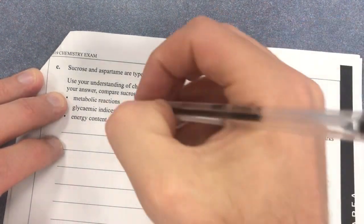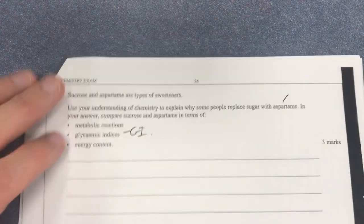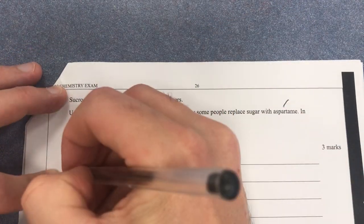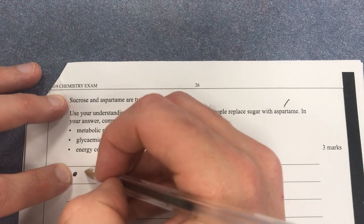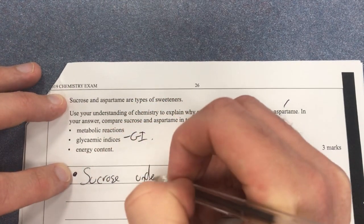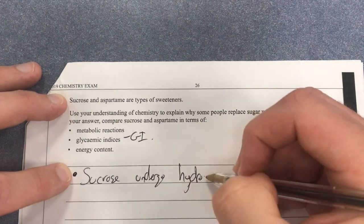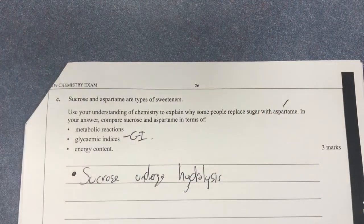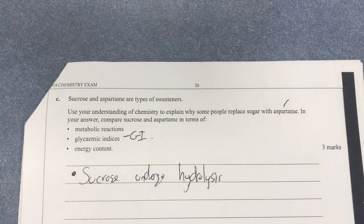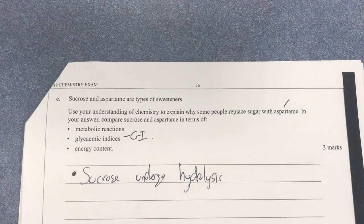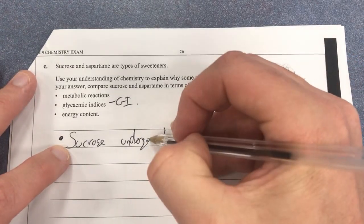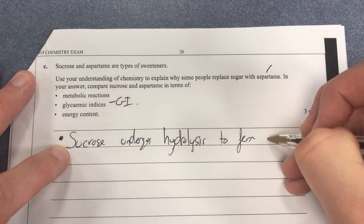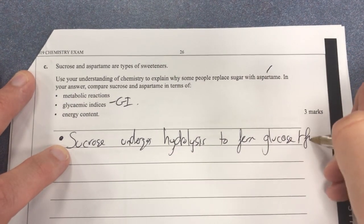Looking at glycemic index and energy content, let's start with the metabolic reactions. Sucrose undergoes hydrolysis — it's in the data booklet. Sucrose turns into glucose and fructose, so sucrose undergoes hydrolysis to form glucose and fructose.